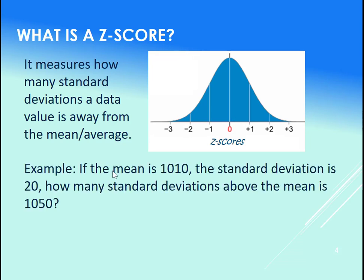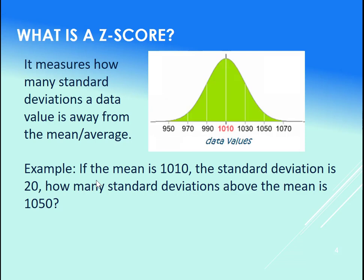Now let's just look at a specific example. So let's say your mean is at 1010, standard deviation at 20. How many standard deviations above the mean is 1050? Okay, so again we have this graph here, or this data set right here.